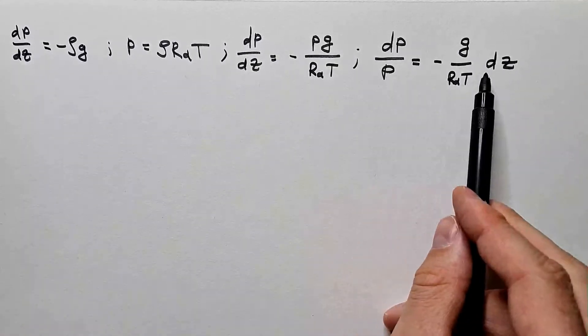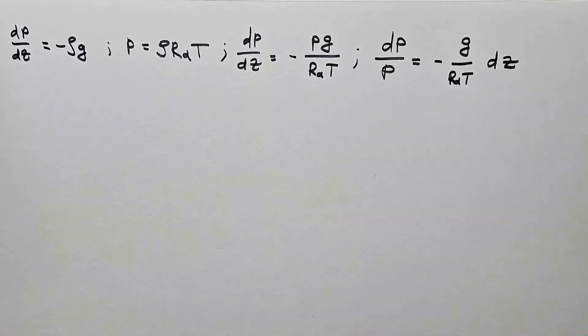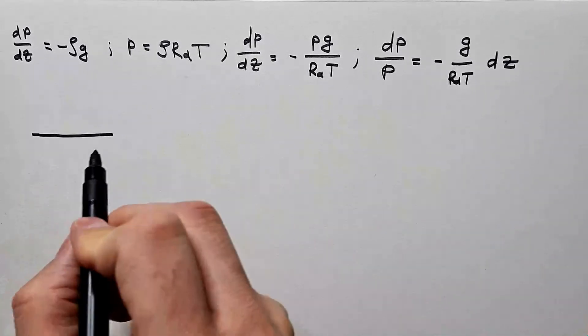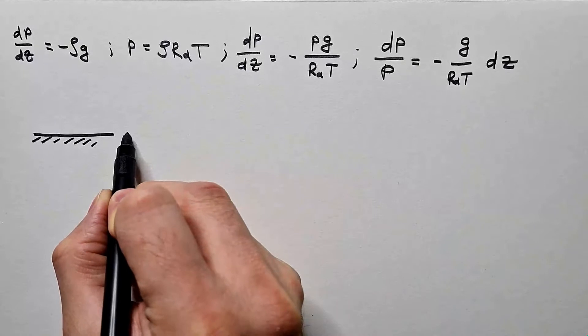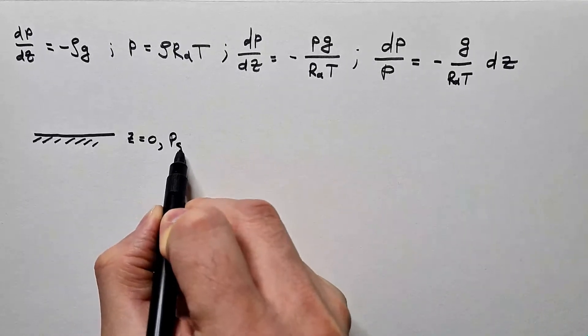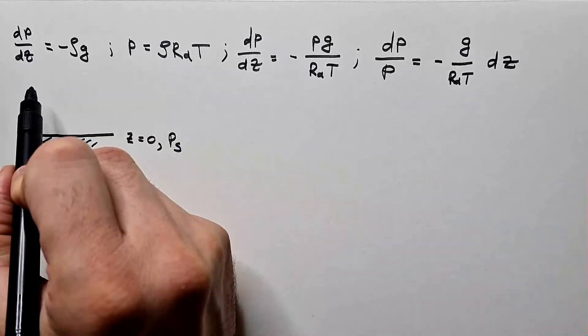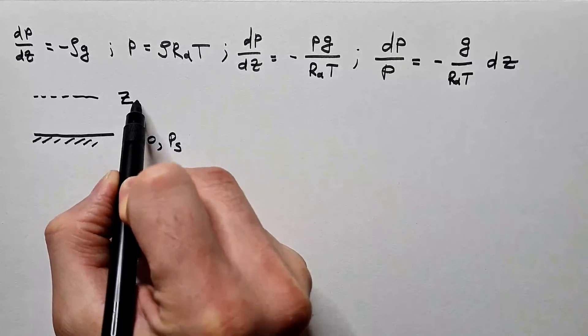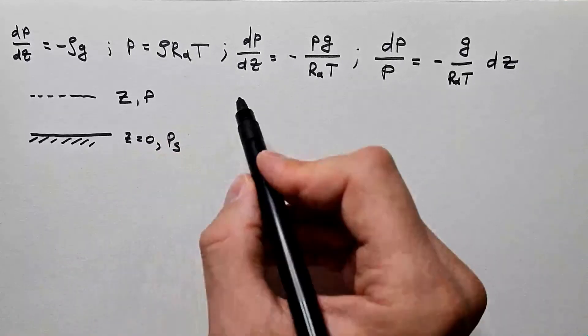Now, we need to integrate this expression, and we carry out integration between surface, which is height z equals 0, and we have pressure ps, up to some height z, where we have pressure p.